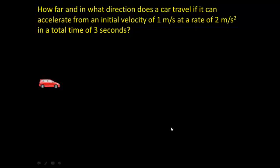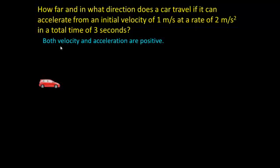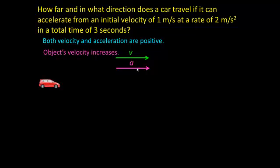Here's the problem: how far and in what direction does a car travel if it accelerates from an initial velocity of 1 m/s, at a rate of 2 m/s², over a total time of 3 seconds? First, notice that both the velocity and the acceleration are positive, which tells us the object's velocity is going to increase. Whenever the velocity and acceleration vectors point in the same direction, the velocity increases.